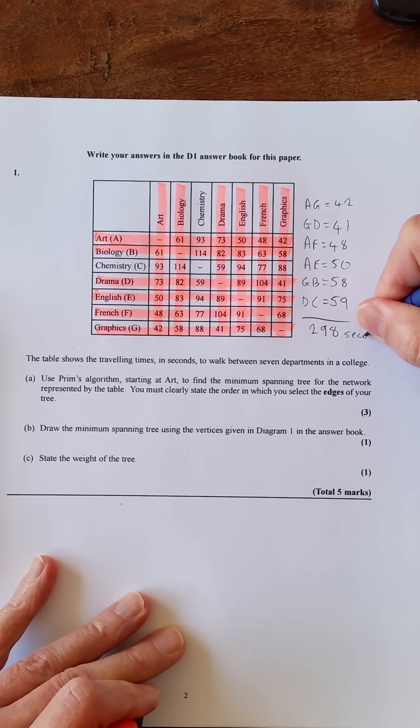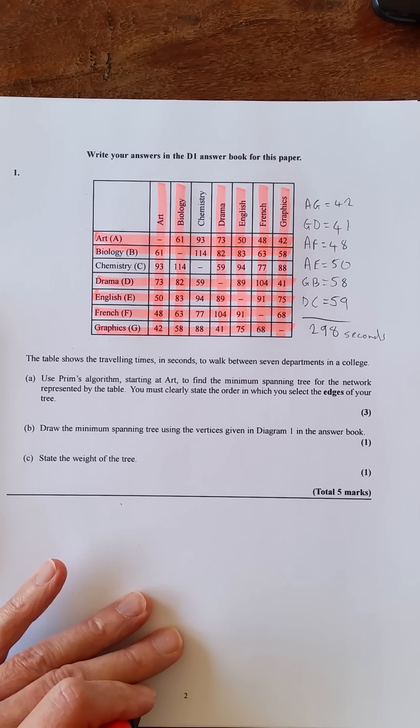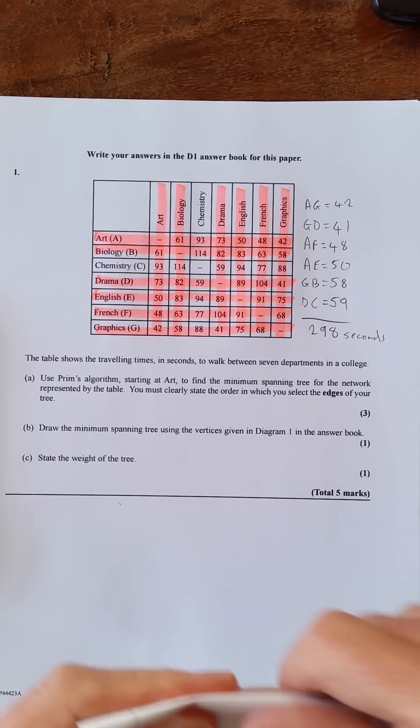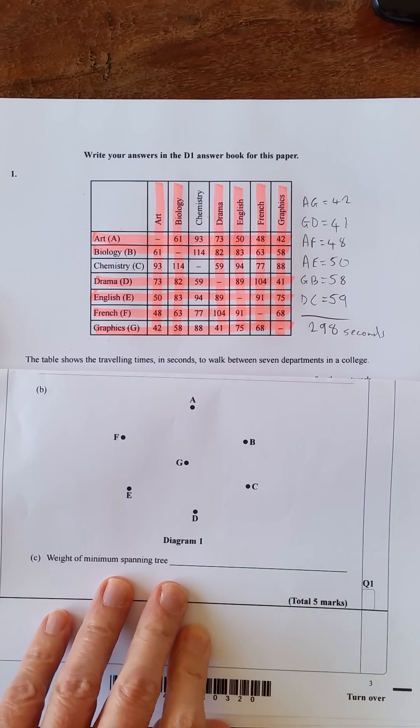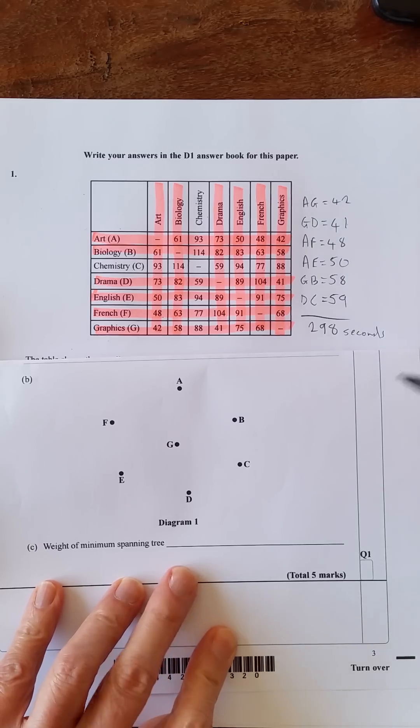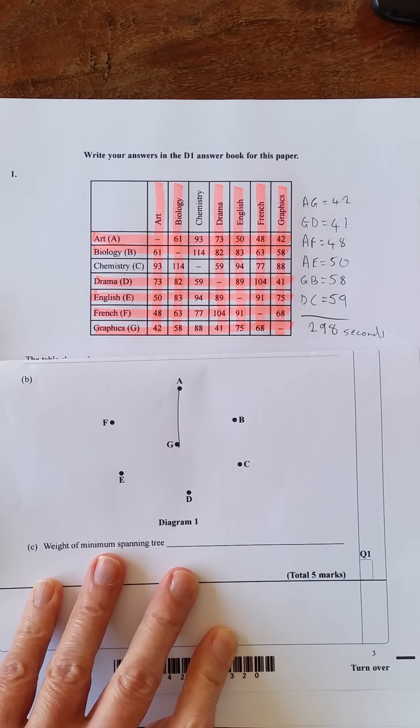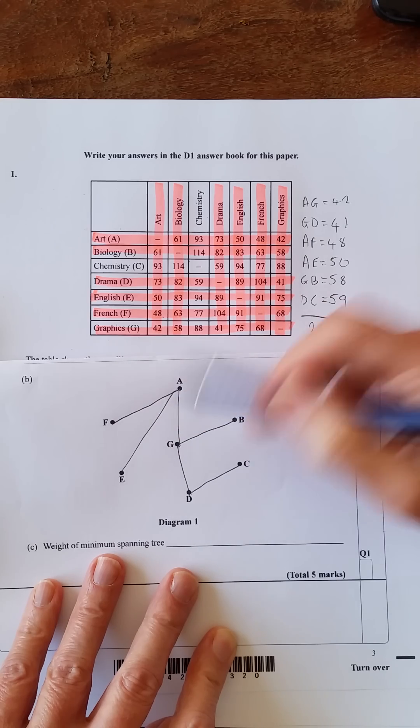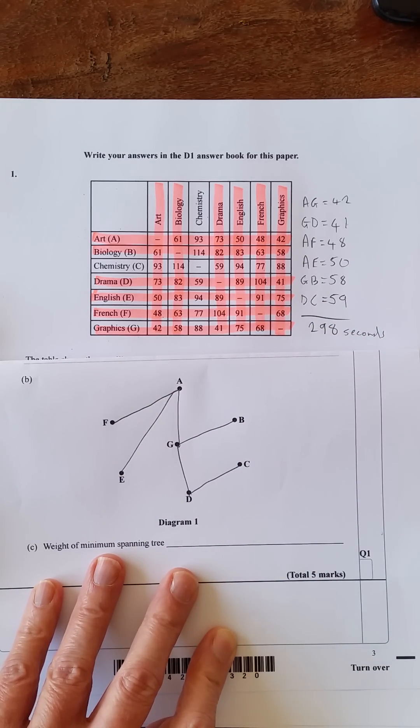So that's that part done. Let's have a look at this one, says draw the minimum spanning tree using the vertices in diagram one in the answer book. So let's just fold this over so I can show you what's happening here. So we've got AG is 42, so AG, now we've got GD 41, AF 48, AE 50, GB 58, and DC 59. And that's it, just make sure that all of the arcs reach all of the nodes. So that is a minimum spanning tree, just one region there, that's it.